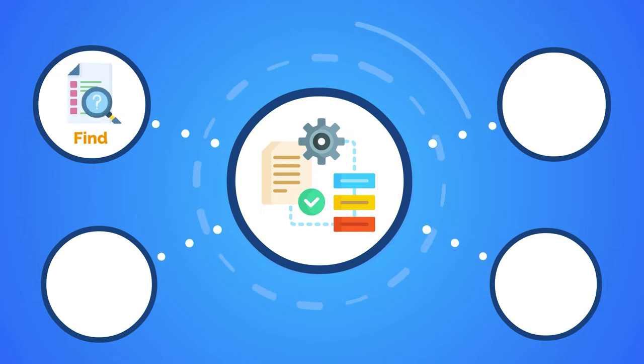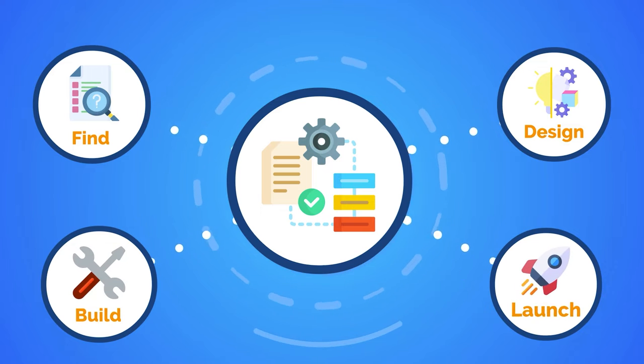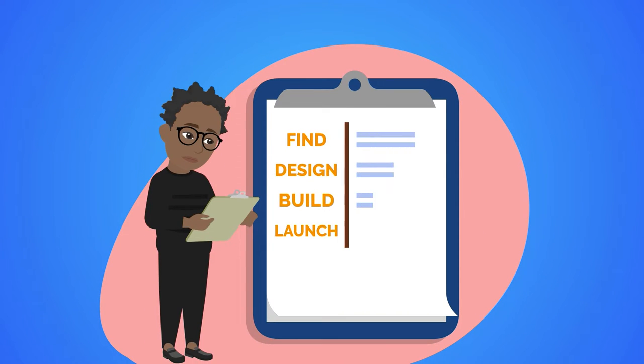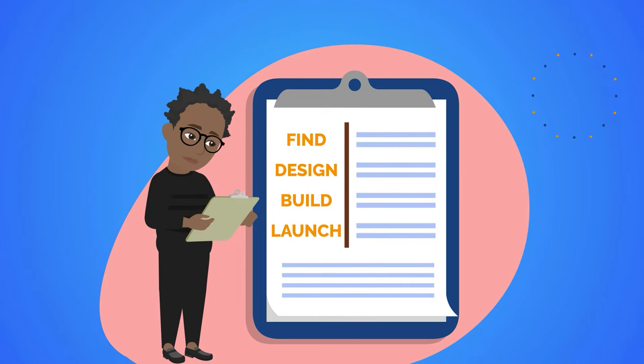Delivering an automation project requires four sets of tools: Find, Design, Build, and Launch. Let's take a look at these and the methods in which you can use them.